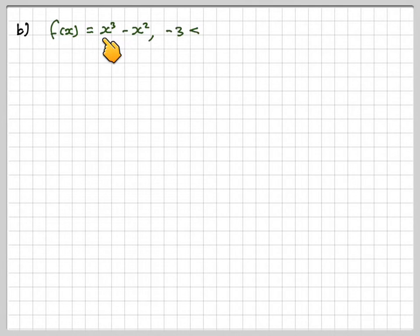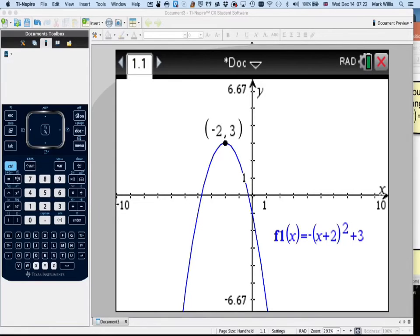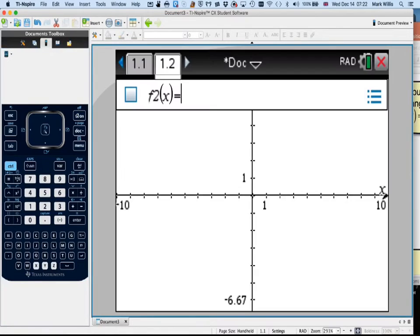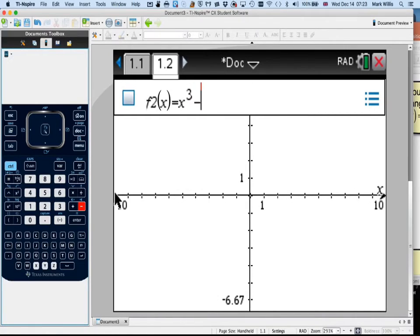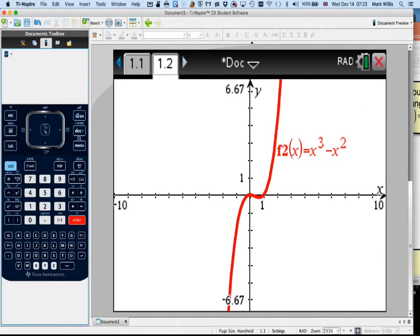Okay, next one. f(x) is equal to x³ - x² from x being between -3 and 3, but not equal to 3. So what we need to do is we'll go and sketch that. So we'll just make a new window for graphing. And we'll just sketch that so it's x³ - x². We won't worry about restricting the domain. So we'll get a graph looking like that.